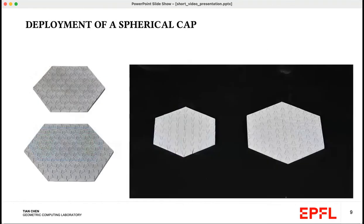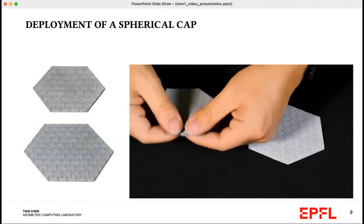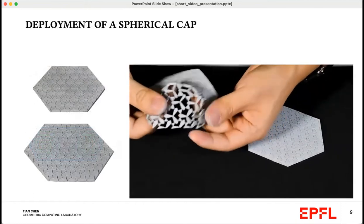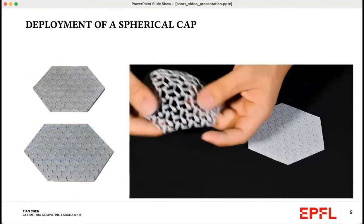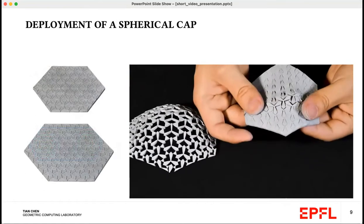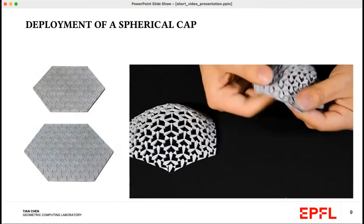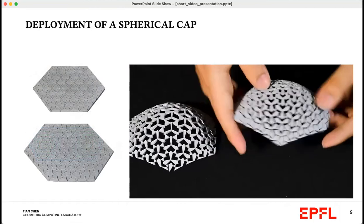Here's an example of a simple spherical cap designed with two different ranges of scale factors. Note that if I pop open one unit cell, its neighbors open as well in a cascading fashion, making deployment very easy.